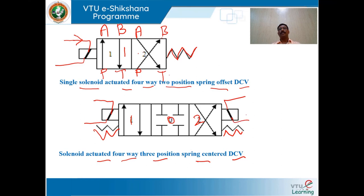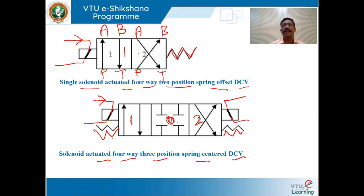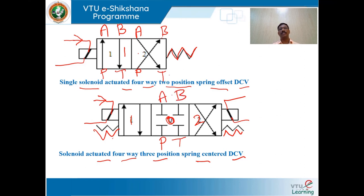When there is no current or the coil is not energized, the valve moves to the center path configuration due to opposing spring forces and all ports are closed. P is connected to the pump line, T to the tank line, and output ports A and B are shown.